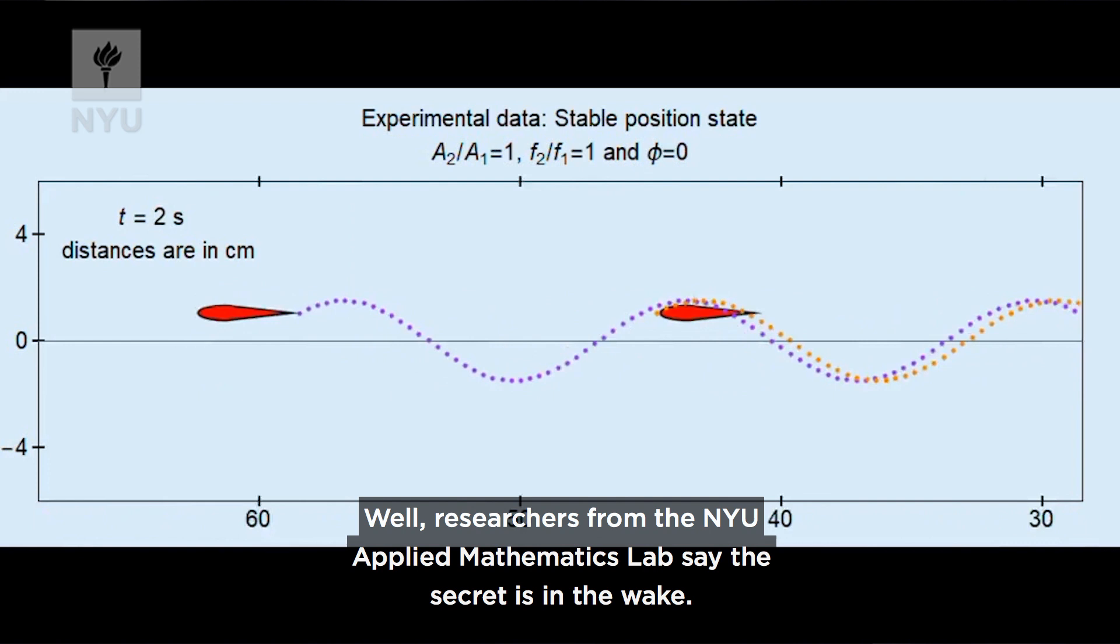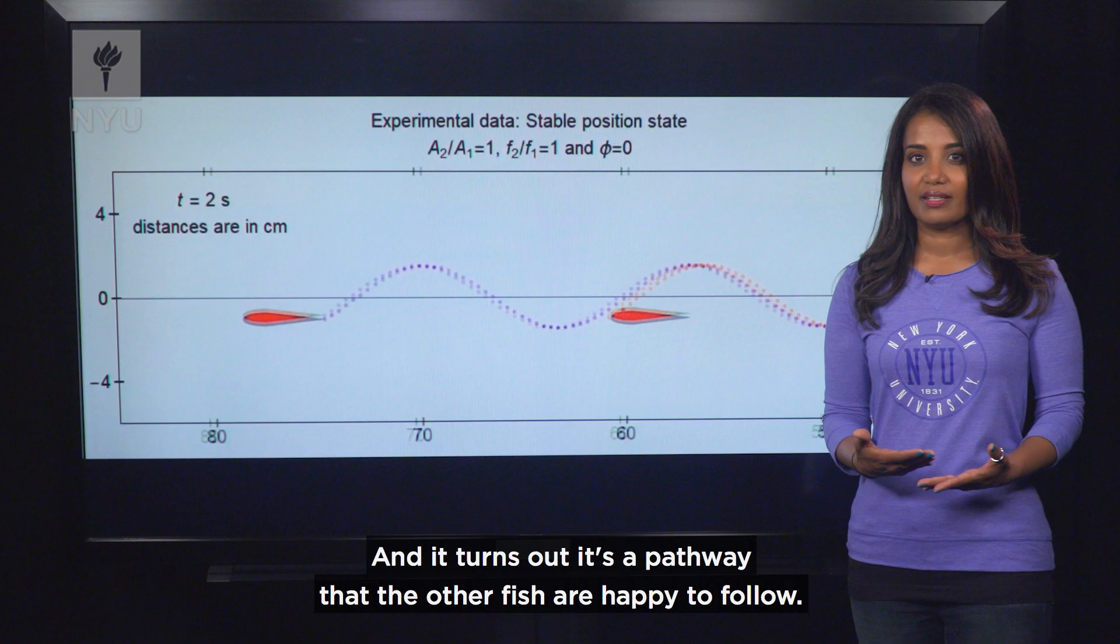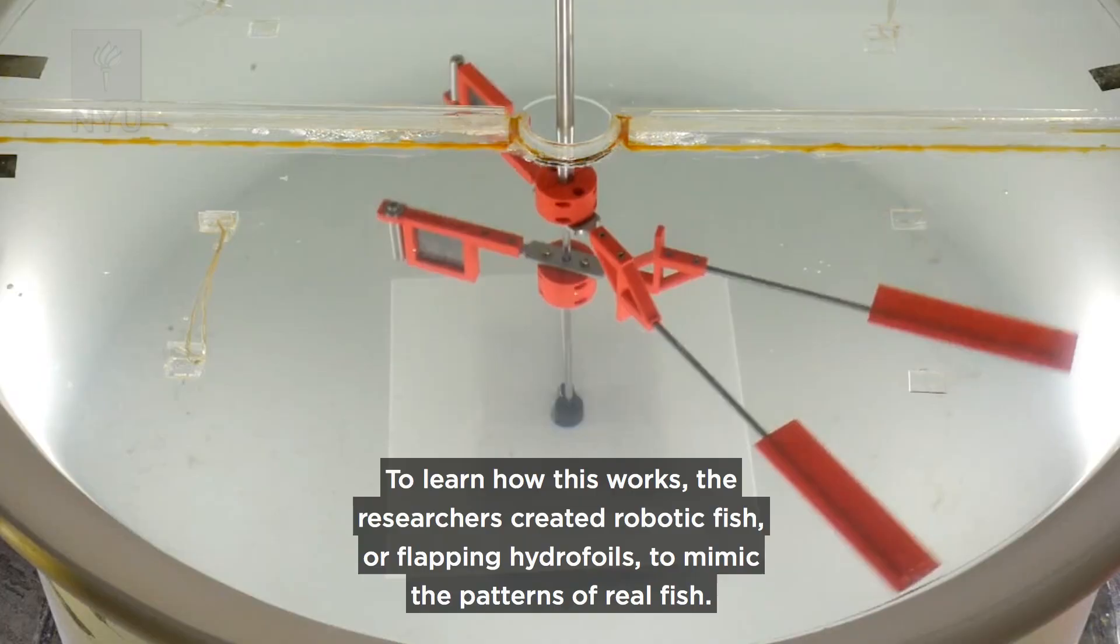Well, researchers from the NYU Applied Mathematics Lab say the secret is in the wake. This region of disturbed flow is the wake and it's created by the fish in front as they move through fluid, and it turns out it's a pathway that the other fish are happy to follow.